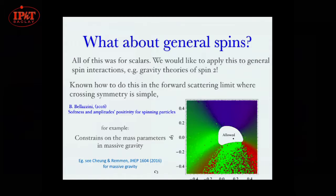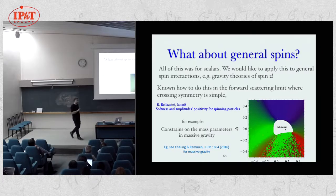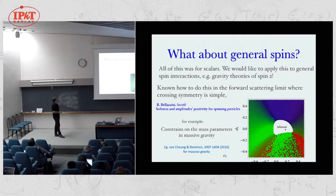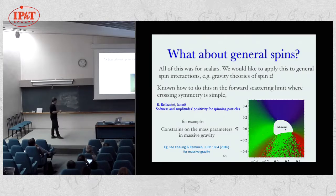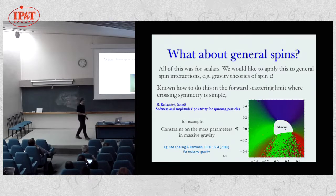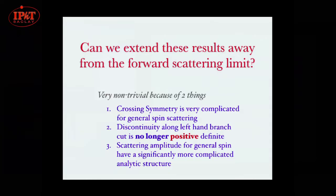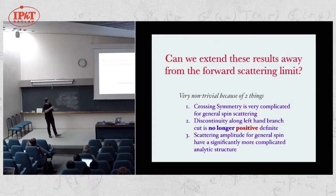That was really just warm-up to the more general question of putting constraints on effective theories for gravity. In the case of gravity, we know we have to have spin-2 particles. For example, in massive gravity, we want to look at the scattering of spin-2 particles. Can we generalize these analyticity statements to spin-2 particles? In the forward limit it's relatively straightforward, and this has been used recently to put constraints on the mass parameters in massive gravity, finding a finite allowed region of those parameters.